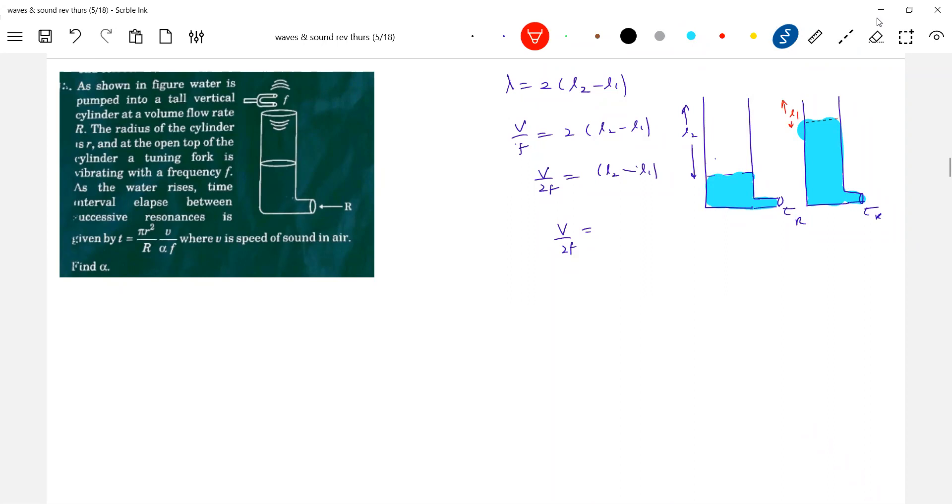So L2 minus L1, L2 minus L1 is what? Increase in area, increase in the length of the water column. And who will supply that?